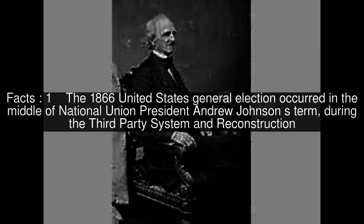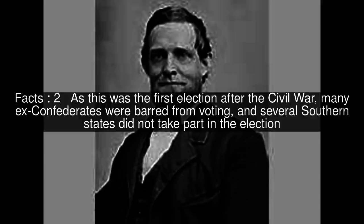The 1866 United States general election occurred in the middle of National Union President Andrew Johnson's term, during the third-party system and Reconstruction. As this was the first election after the Civil War, many ex-Confederates were barred from voting, and several southern states did not take part in the election.